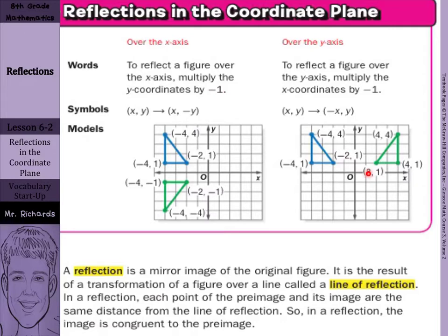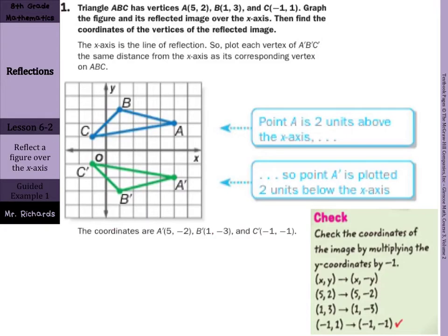Triangle ABC has vertices A(5, 2), B(1, 3), C(negative 1, 1). Graph the figure and its reflected image over the x-axis. Then find the coordinates of the vertices of the reflected image. Our first shape is the blue one here — ABC.